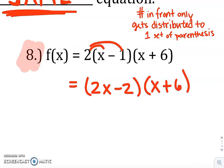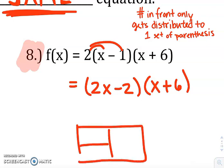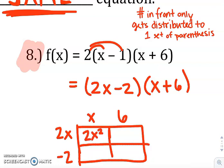So 2 times x minus 1 will give you 2x minus 2 times that x plus 6. So now we will go and do that generic rectangle. So 2x minus 2, so 2x times x is 2x squared, 2x times 6 is 12x, negative 2 times x is negative 2x, negative 2 times 6 is negative 12.